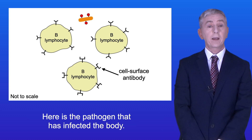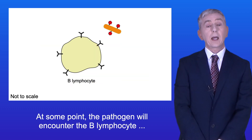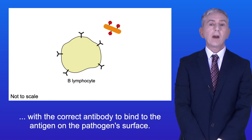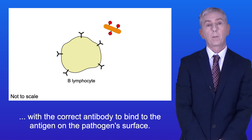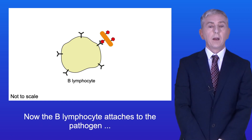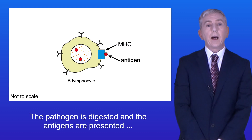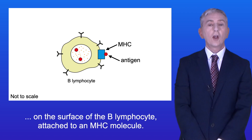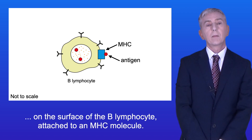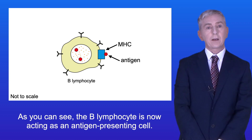Here's the pathogen that has infected the body. At some point, the pathogen will encounter the B lymphocyte with the correct antibody to bind to the antigen on the pathogen's surface. Now the B lymphocyte attaches to the pathogen, and the pathogen is engulfed. The pathogen is digested, and the antigens are presented on the surface of the B lymphocyte, attached to an MHC molecule. So the B lymphocyte is now acting as an antigen-presenting cell.